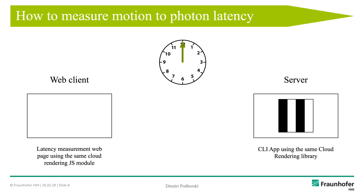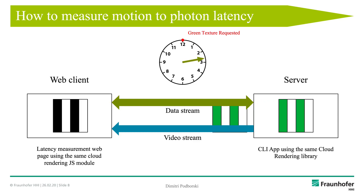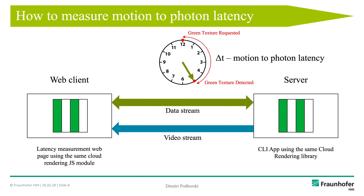To measure motion-to-photon latency, we created a web client application and a console application for the server. The client establishes a data stream connection to the server, then a peer-to-peer connection is established and the server starts streaming a simple color bars video. The measurement starts when the client requests a texture color change and starts a timer as that data leaves the client. The data goes to the server, changes the color, and returns. As soon as the green texture is detected on the client side, we stop the timer and record the motion-to-photon latency.